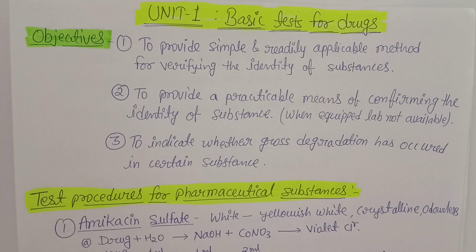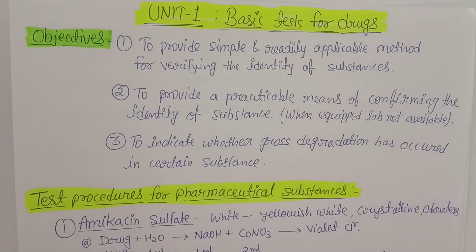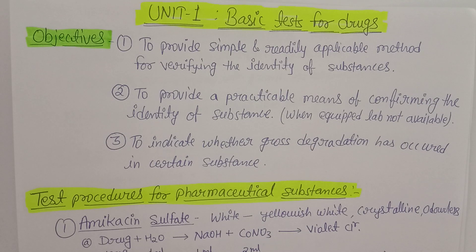Today we are going to discuss the QCSH subject, Unit 1 — Quality Control and Standardization of Herbal Drugs. In Unit 1, the basic tests for drugs are very important, and there are not many resources available on the web or in libraries. Here we are going to discuss what the basic tests for drugs are — for pharmaceutical substances, medicinal plant products, medicinal plant materials, and pharmaceutical dosage forms.